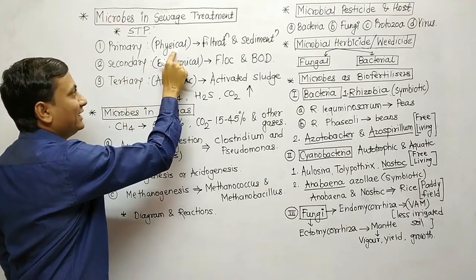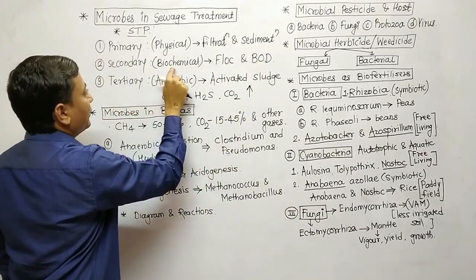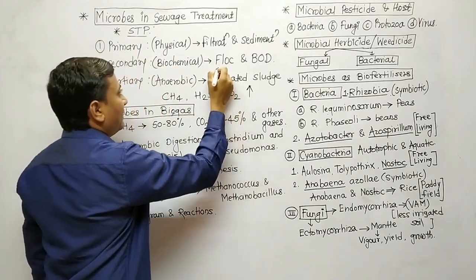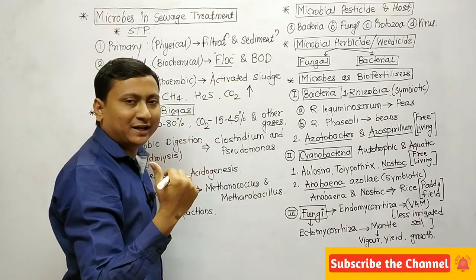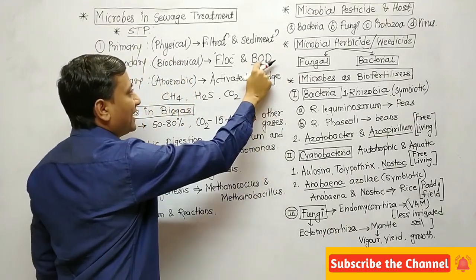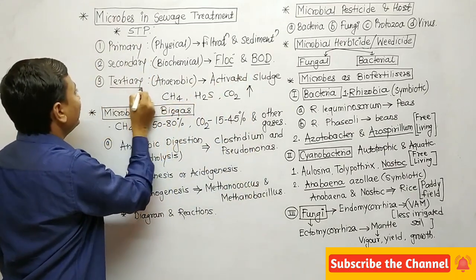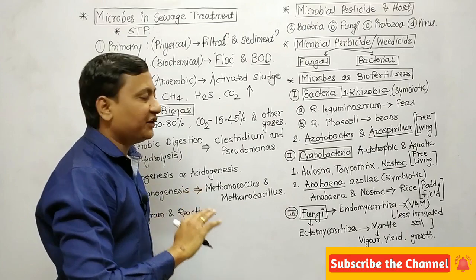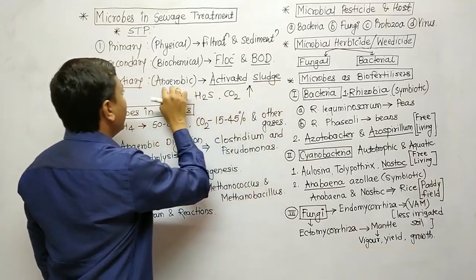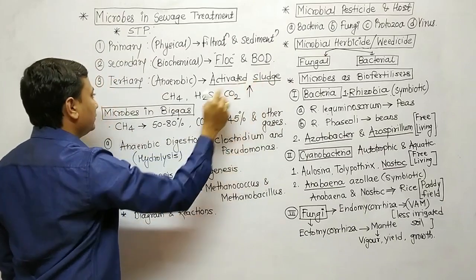Primary treatment is a physical process where filtration and sedimentation are the two important activities carried out. Secondary treatment is a biochemical process, also called a biological process — this involves floc formation. This is also called BOD — Biological Oxygen Demand. Tertiary treatment involves anaerobic treatment using anaerobic microorganisms.